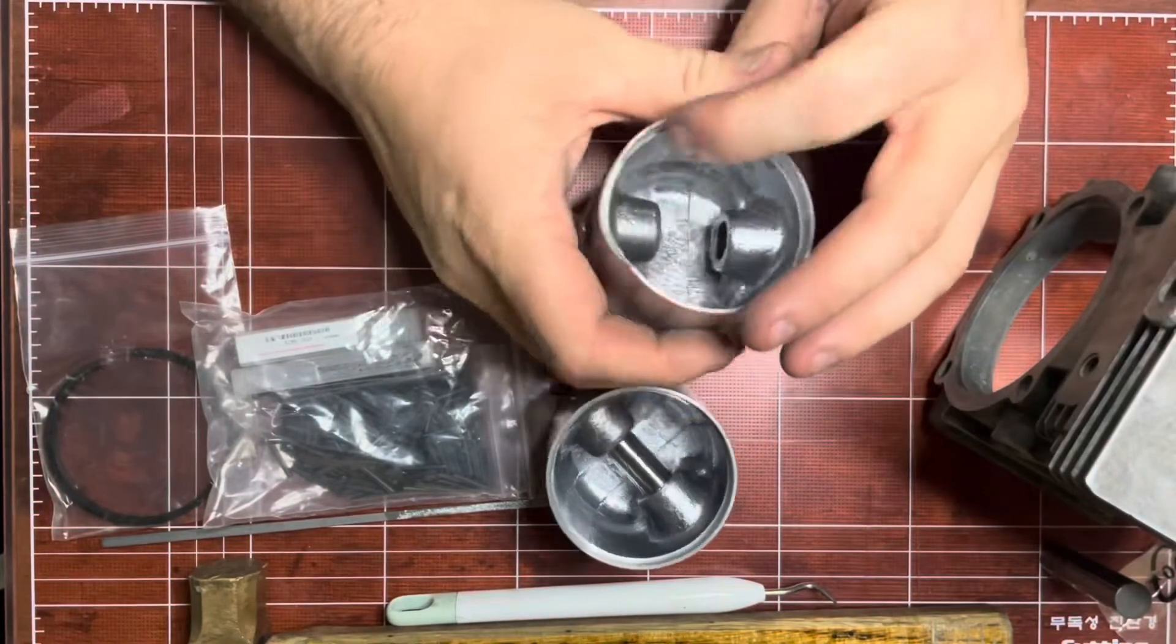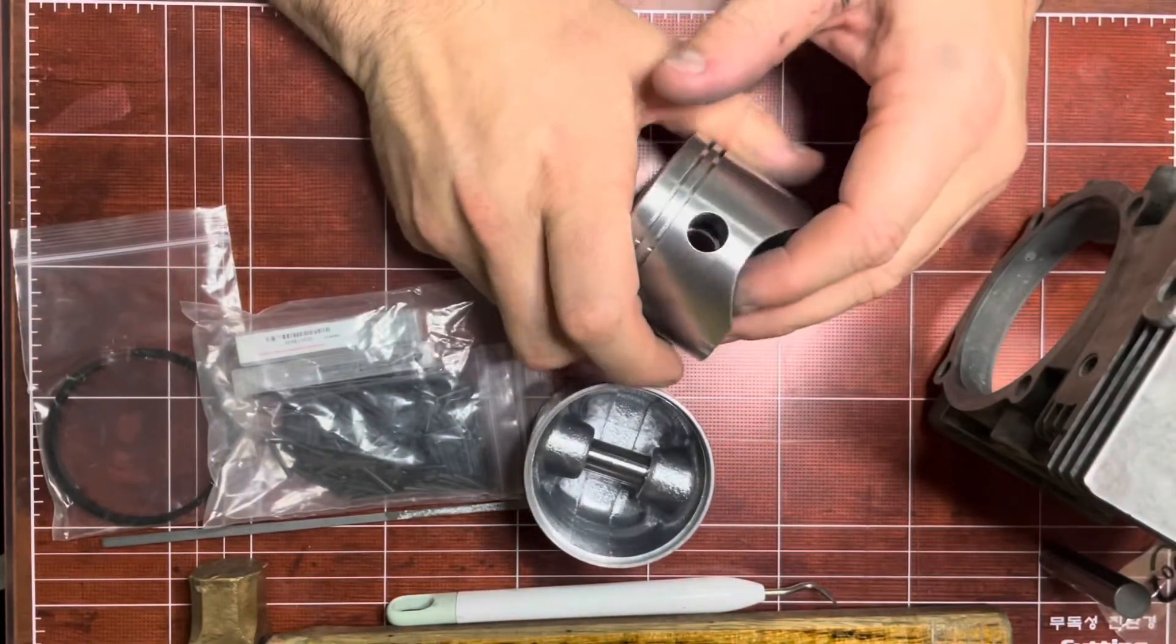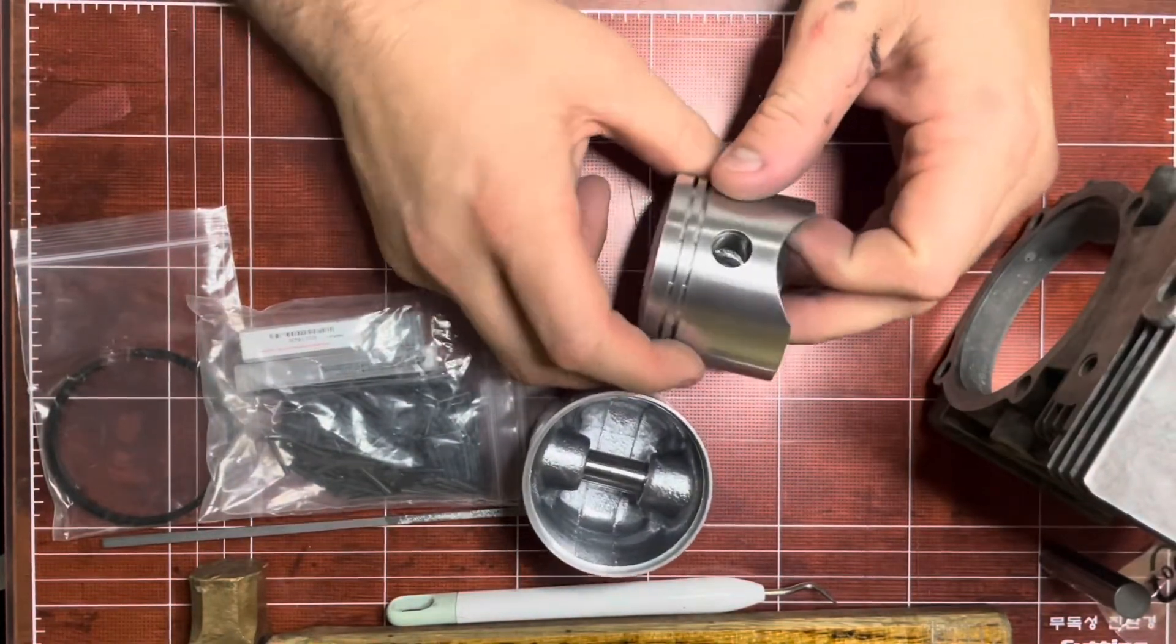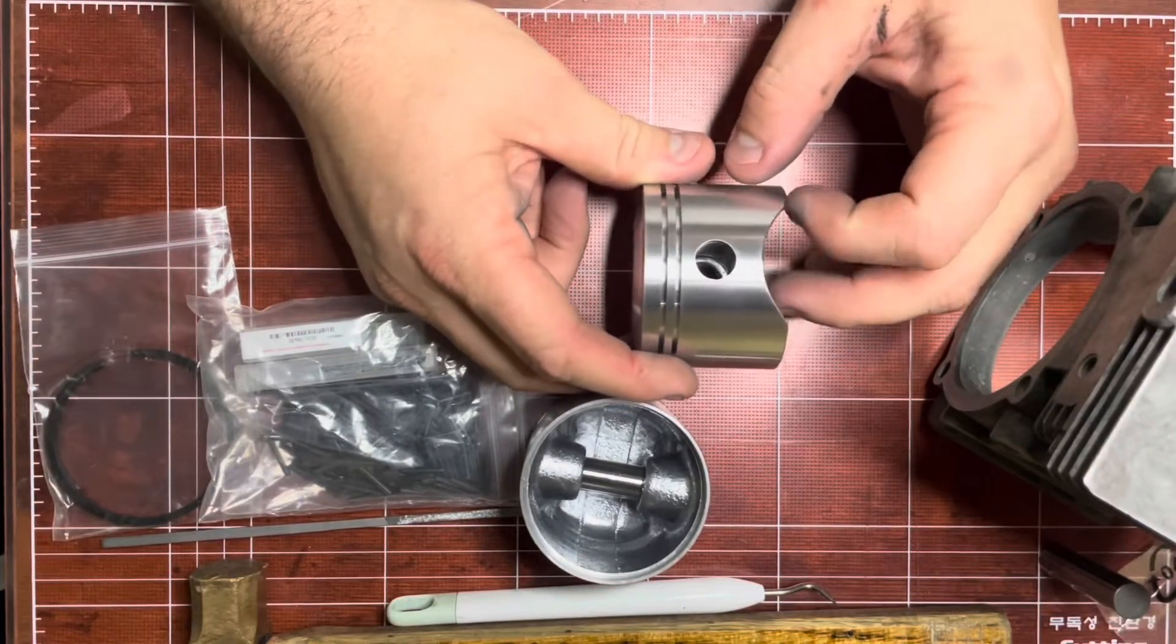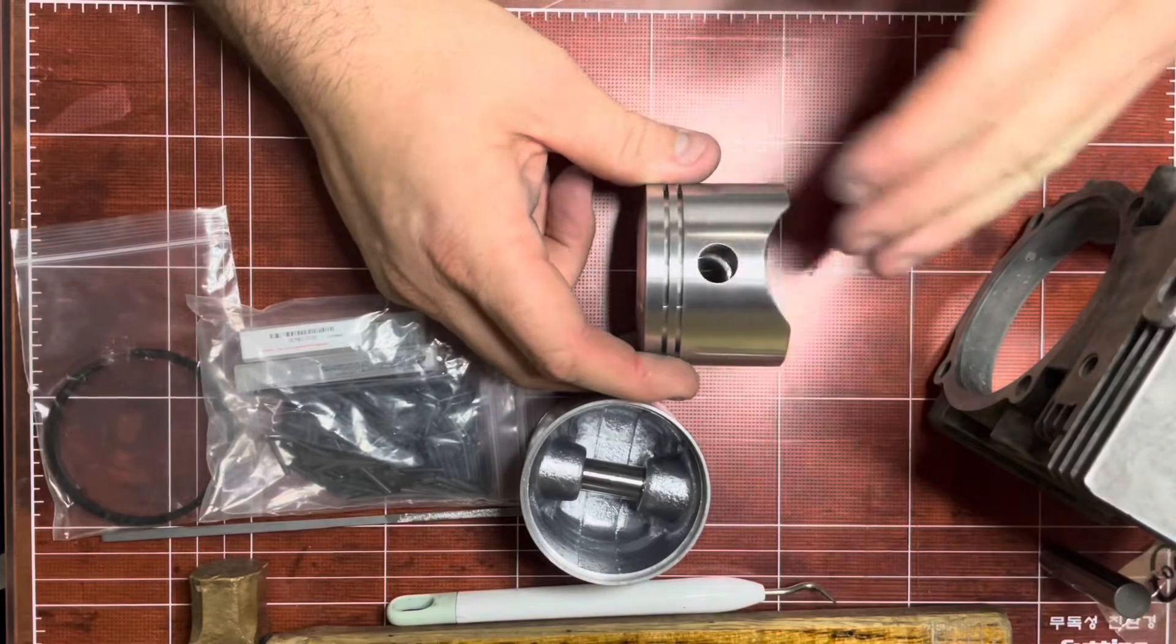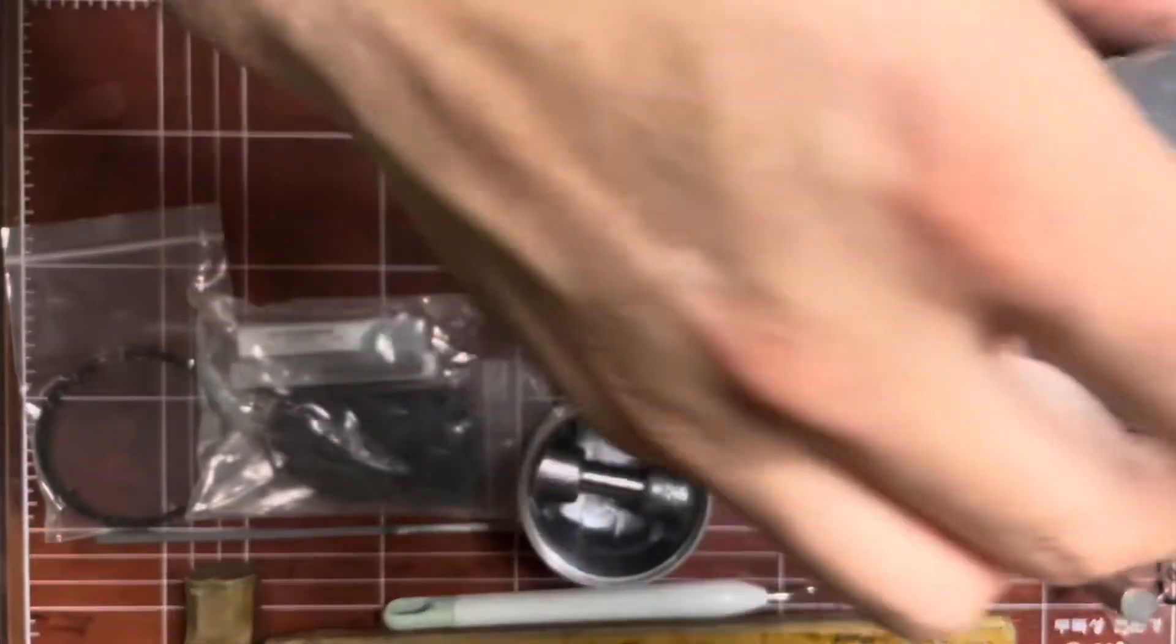What I've done is relieved this just like a Westbend 700 piston. If you look at a Westbend 700 you'll see that it's got this big crescent moon shape cut out, and what that does...